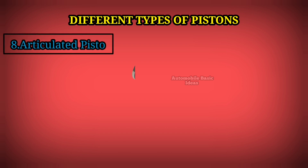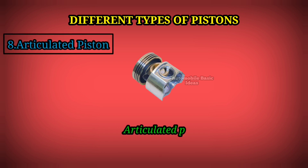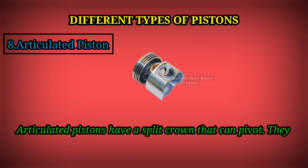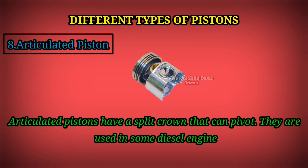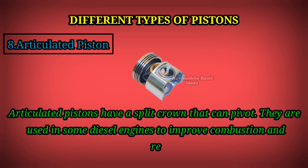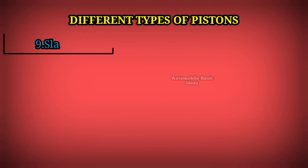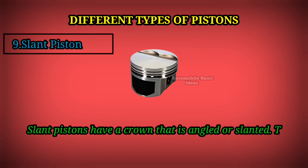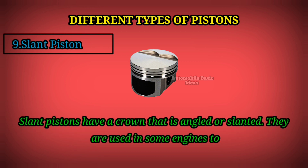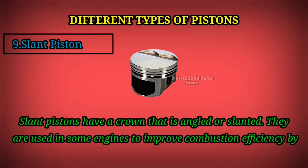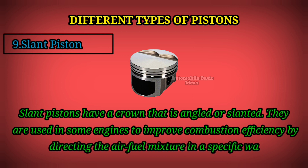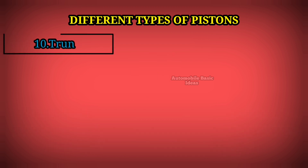Articulated piston: Articulated pistons have a split crown that can pivot. They are used in some diesel engines to improve combustion and reduce emissions. Slant piston: Slant pistons have a crown that is angled or slanted. They are used in some engines to improve combustion efficiency by directing the air-fuel mixture in a specific way.